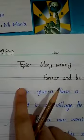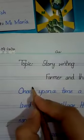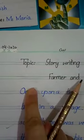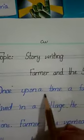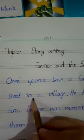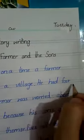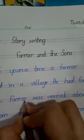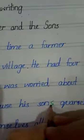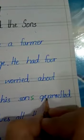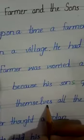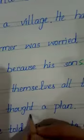Start with one finger gap from this point. Once upon a time, a farmer lived in a village. The farmer was worried because his sons quarreled — Q-U-A-R-R-E-L-L-E-D — quarreled among themselves all the time. The farmer thought of a plan.